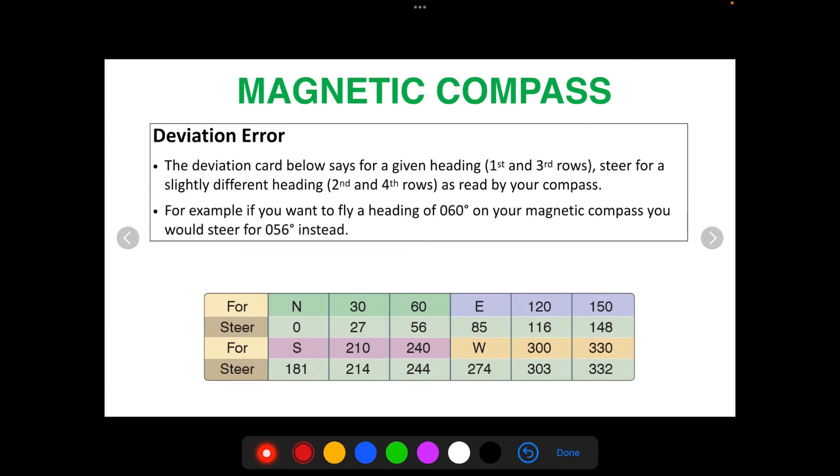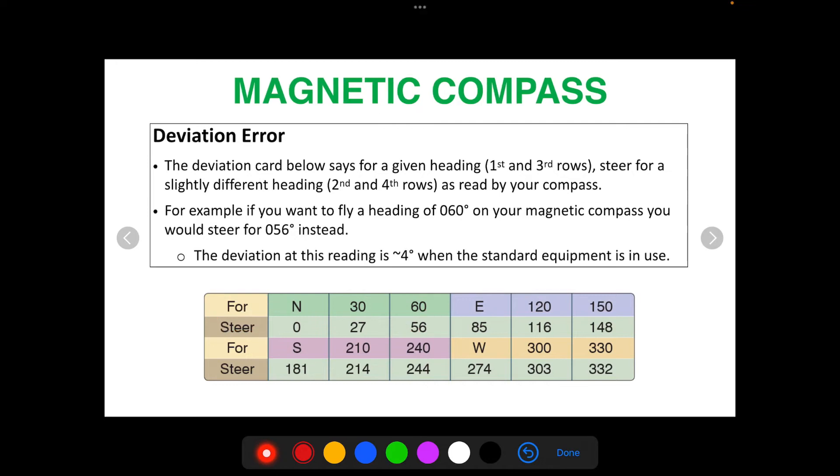For example, if you want to fly a heading of 060, so you look for 060 on your magnetic compass, you would steer for 056. So the deviation at this reading is about four degrees, so there's about a four degree error when you want to fly to 060.